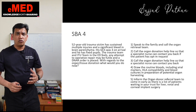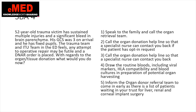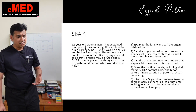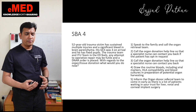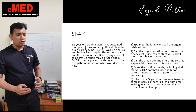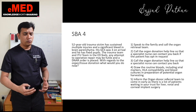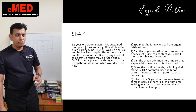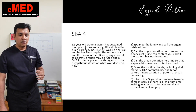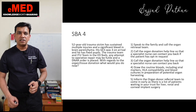Question number four: a 52-year-old trauma victim has sustained multiple injuries and a significant bleed in the brain parenchyma. His GCS was 3 on arrival and he has fixed pupils. The trauma team and ITU team feel any attempt at operative repair may be futile and a DNAR order is placed. With regards to organ and tissue donation, the options are: speak to the family and call the organ retrieval team; call the organ donation helpline so the specialist nurse can contact you back if the patient has an opt-in request; call the organ donation helpline so the specialist nurse can contact you back; draw routine bloods including viral markers, HLA compatibility and blood cultures; or inform the organ donor referral team to come in as early as possible.